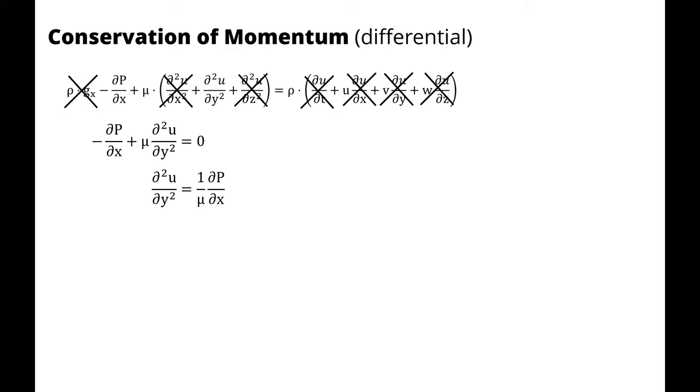Bringing the pressure gradient to the right-hand side of the equation and multiplying by 1 over viscosity, I'm left with the second derivative of u with respect to y is equal to (1/μ)(∂P/∂x).